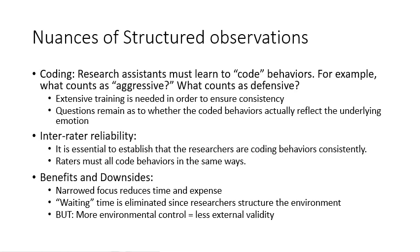The nuances of structured observation relate to coding. Research assistants must learn to code behaviors — for example, what counts as aggressive versus defensive. There's a lot of training needed to ensure consistency, and questions remain whether coded behaviors actually reflect the underlying emotion. We need to establish inter-rater reliability, making sure researchers are coding behaviors consistently. The benefits include a narrowed focus that reduces time and expense, and wait time is eliminated since researchers structure the environment. But the more we control the environment, the less external validity we have.